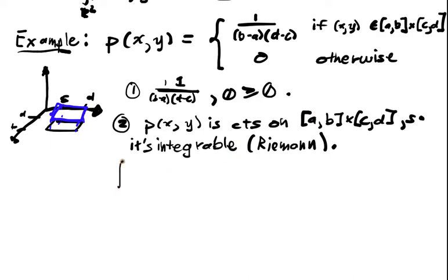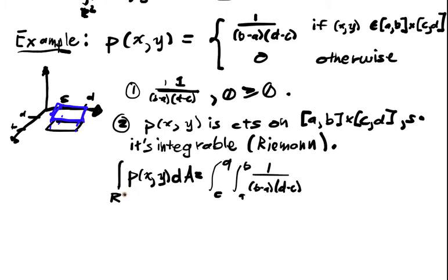If we integrate over the set R, we do a nested integral. This is going to be integral from C to D, integral from A to B, 1/(B-A)(D-C) dx dy. Actually, I want to integrate over all of R², but because it's 0 everywhere else, I'm just integrating over that rectangular region.